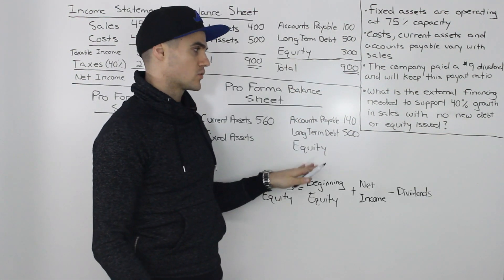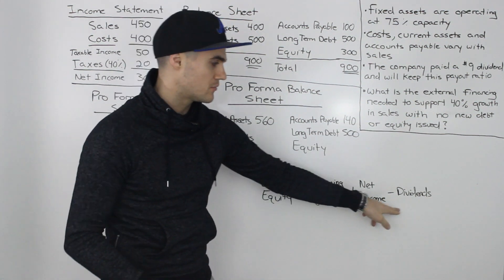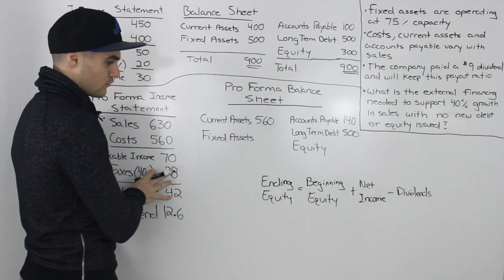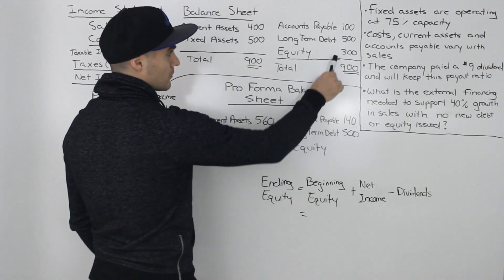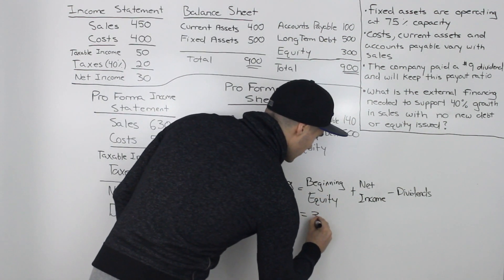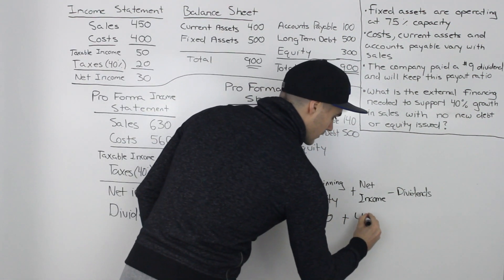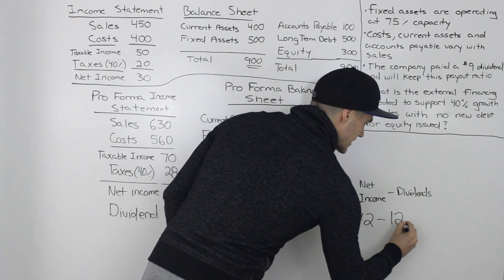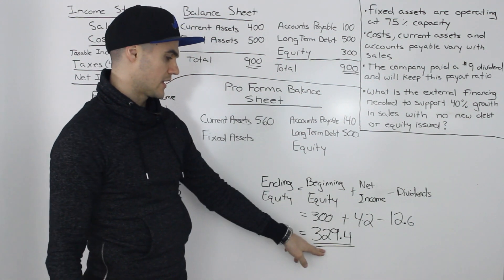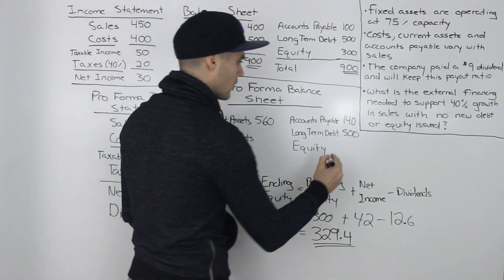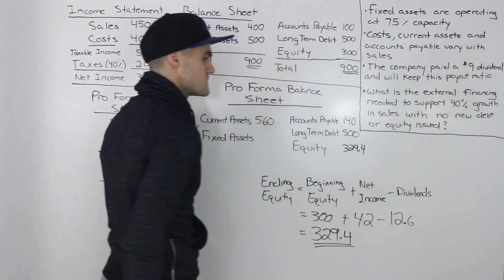Now for the equity, we're told that there's no new equity being issued. So any increase in equity has to come from the retained earnings. And we can figure that out from our pro forma income statement. So our beginning equity figure amount was $300. And then our net income is 42. Out of that $42, 12.6 is being paid out as a dividend. So then adding everything up, we would get a final equity amount of 329.4. So that would be our equity right there, 329.4.